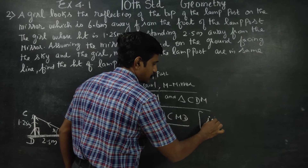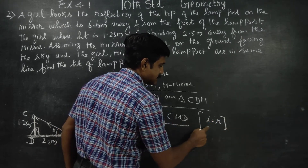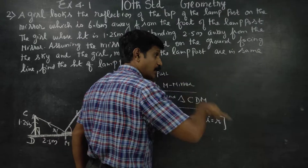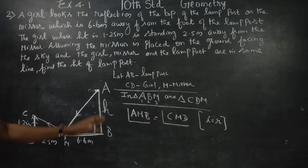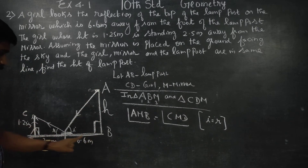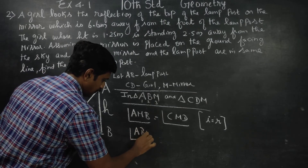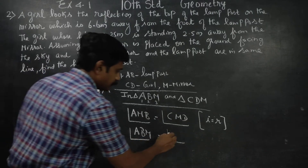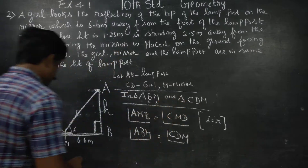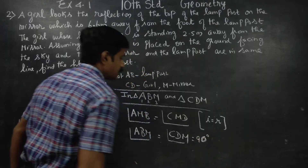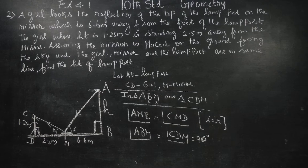I is equal to R means angle of incidence is equal to angle of reflection. Also, angle ABM and angle CDM are each equal to 90 degrees, because they are perpendicular to the ground. So two angles of the triangles are equal, meaning the two triangles are similar.